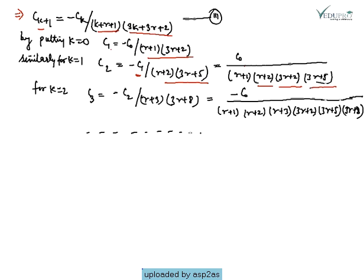Using the recurrence relation, we find: c₁ = -c₀/[(r+1)(3r+1)], c₂ = c₀/[(r+1)(r+2)(3r+2)(3r+5)], c₃ = -c₂/[(r+3)(3r+8)], which gives c₃ = -c₀/[(r+1)(r+2)(r+3)(3r+2)(3r+5)(3r+8)] and so on.